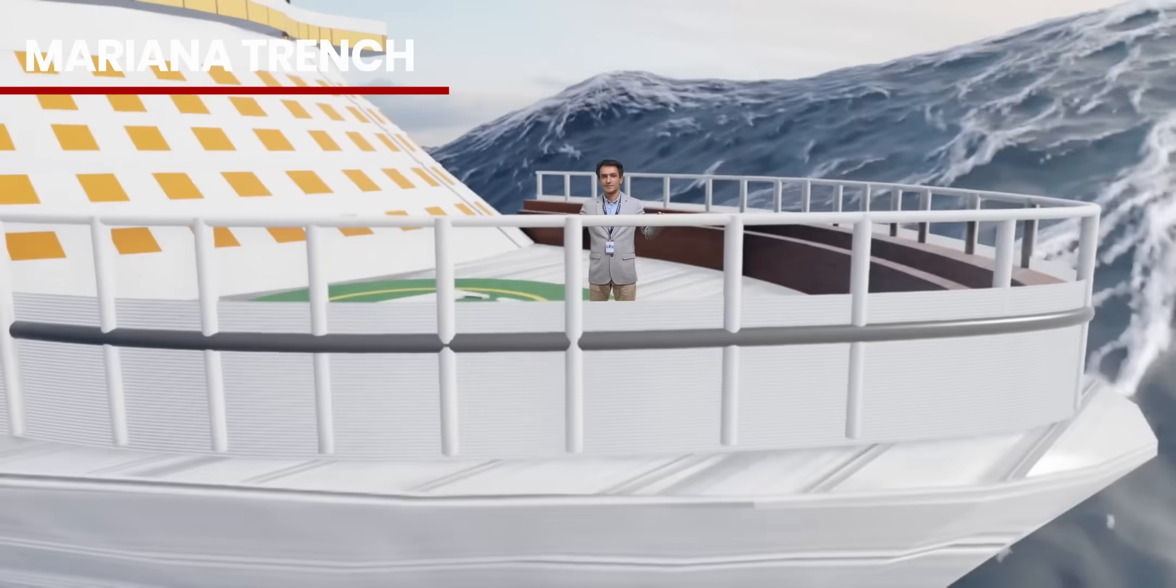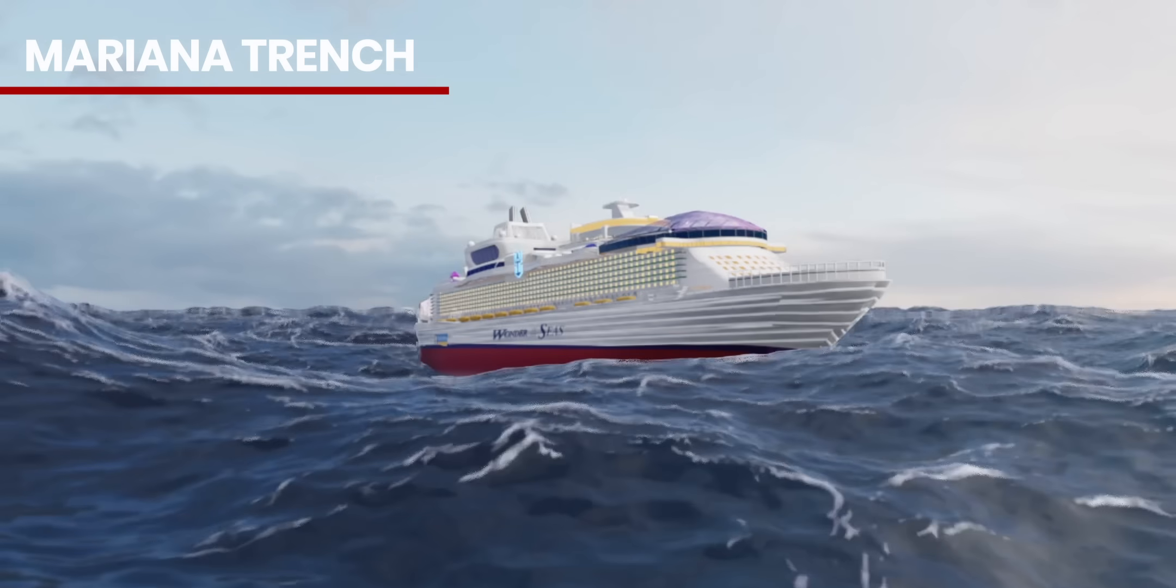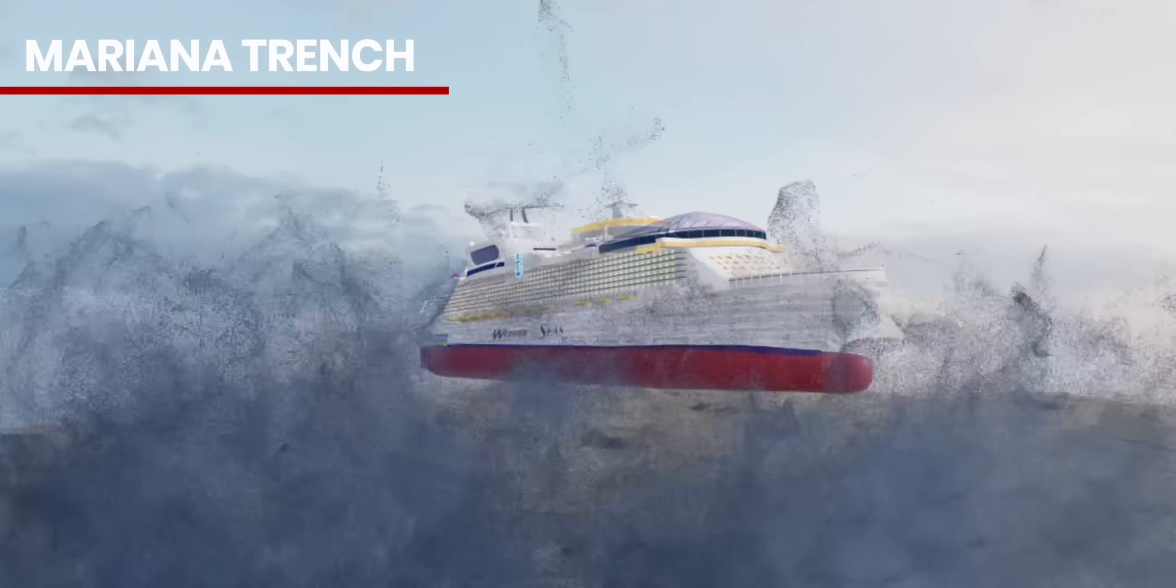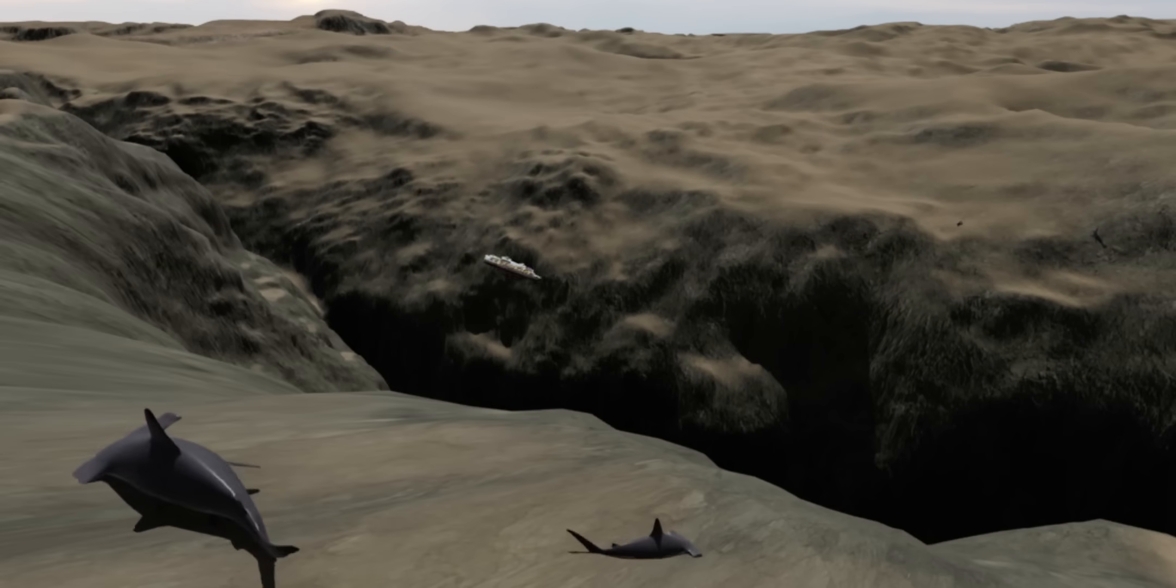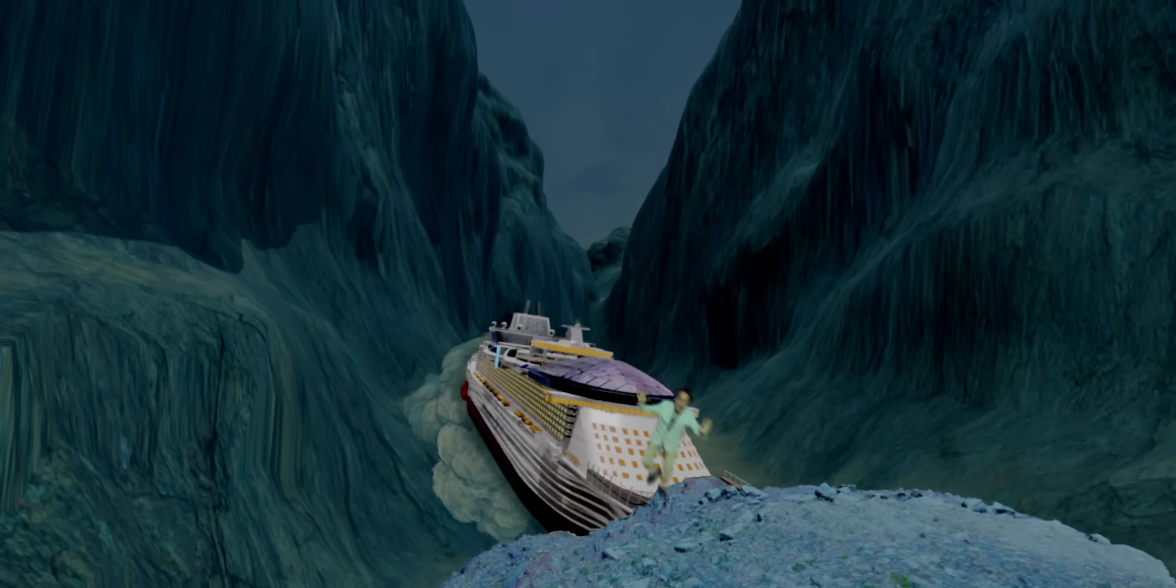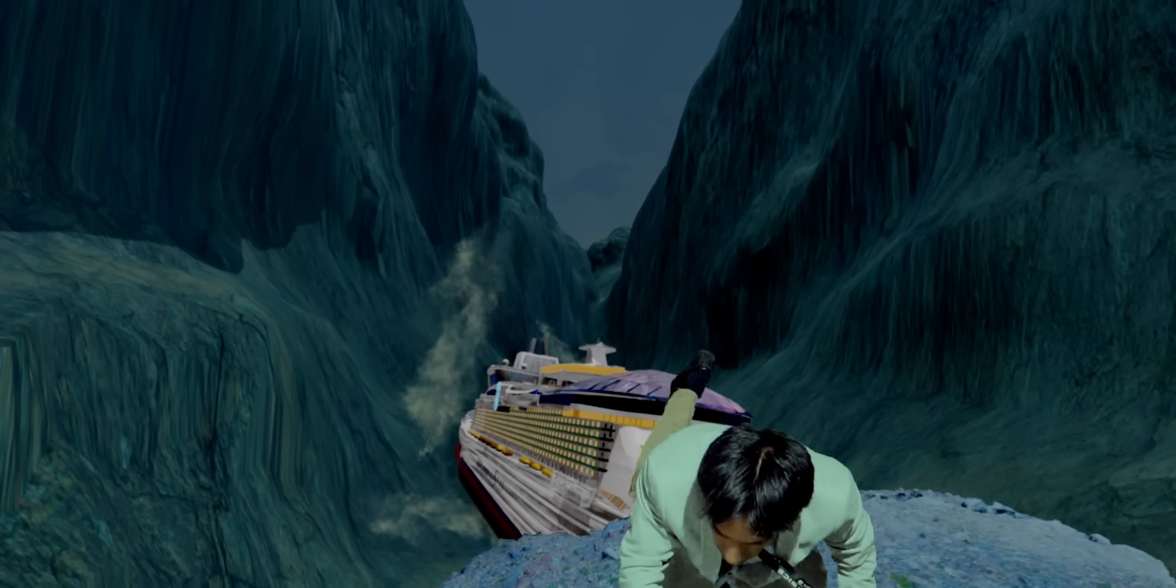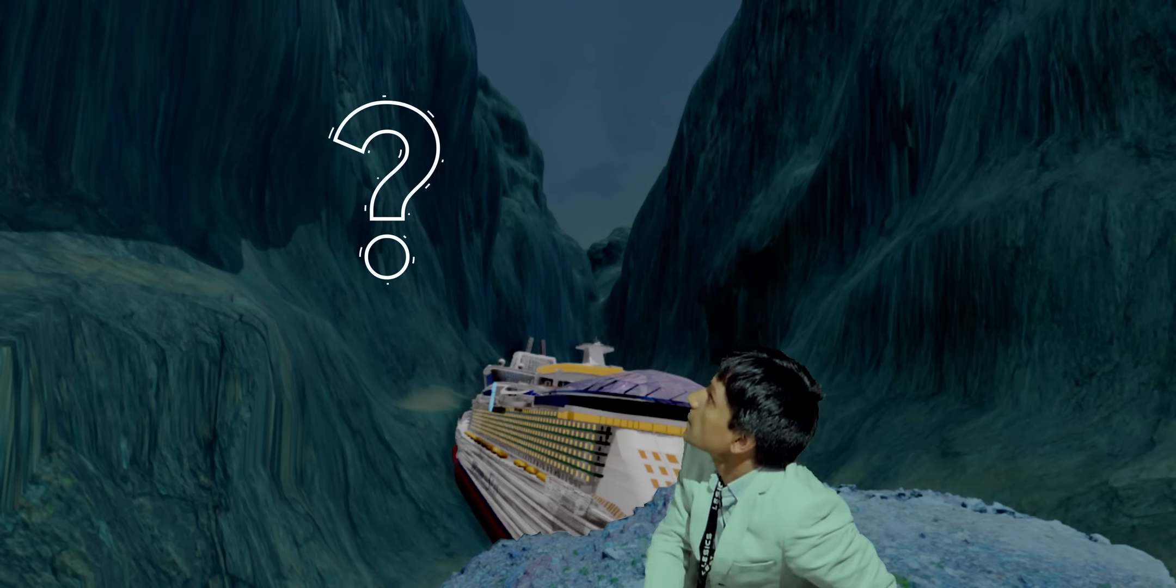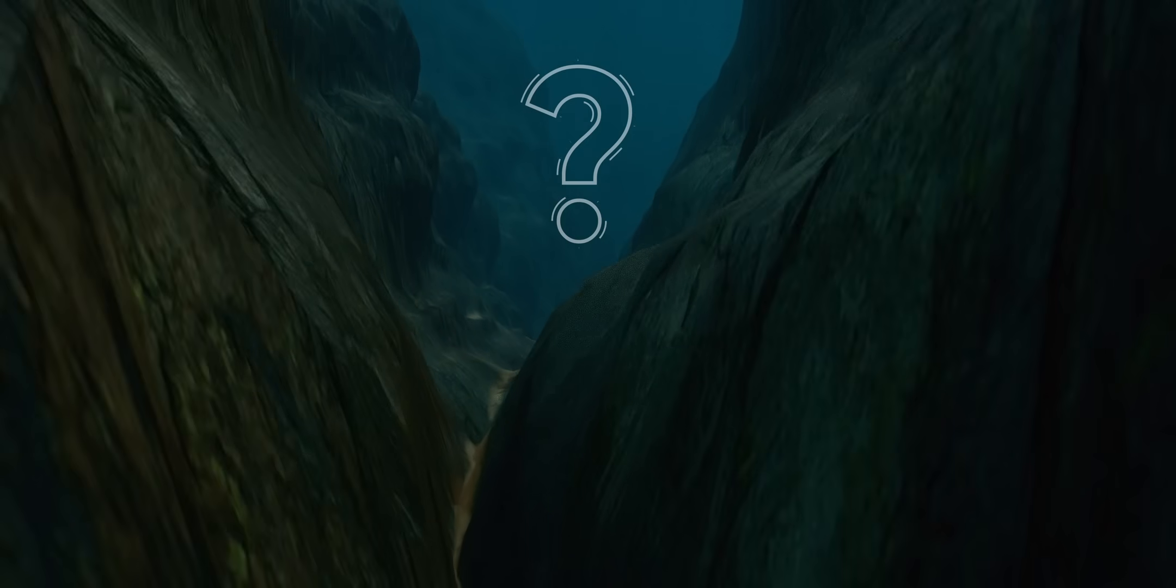The journey over the Mariana Trench is wild. If the ocean water suddenly evaporated, your ship would fall a whopping 10.9 kilometers. Even crazier is the geology in this region. How did the Earth form such a steep and deep geometry here?